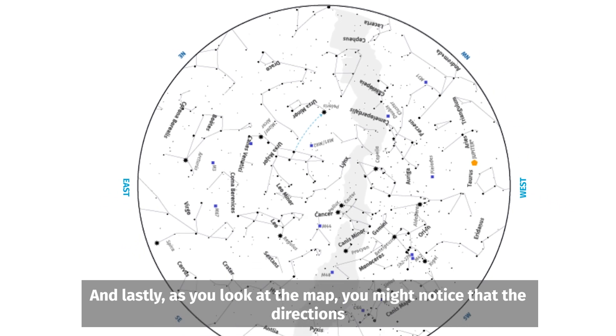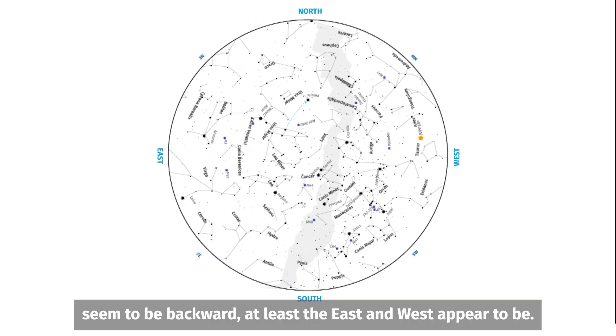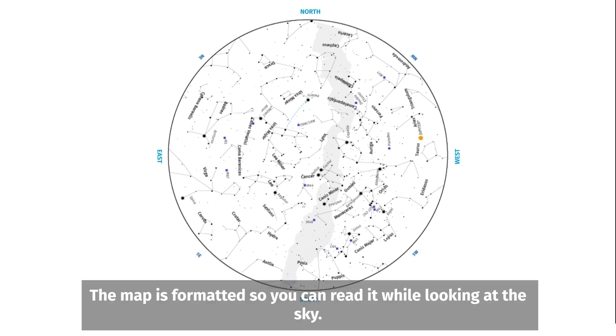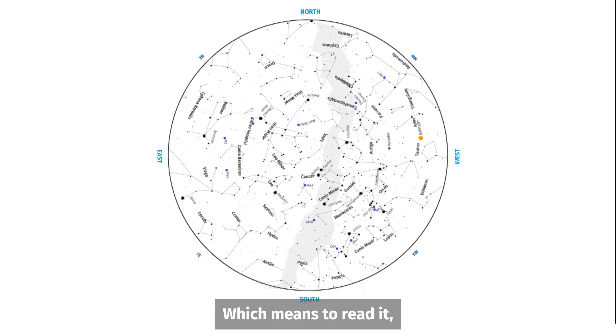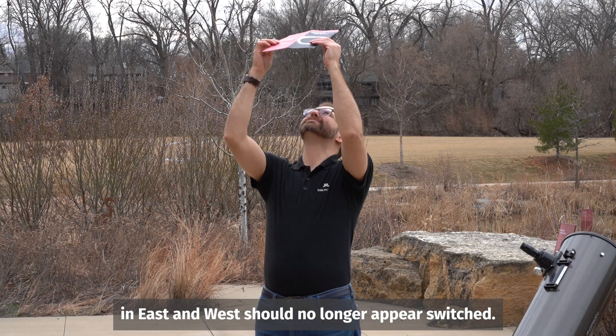And lastly, as you look at the map, you might notice that the directions seem to be backward, at least the east and west appear to be. This is done on purpose. The map is formatted so you can read it while looking at the sky, which means to read it, you hold it above your head. First, determine which direction you are facing. Next, with the map facing up, hold the direction to your torso, then lift the map overhead. The directions should now be properly aligned and east and west should no longer appear switched.